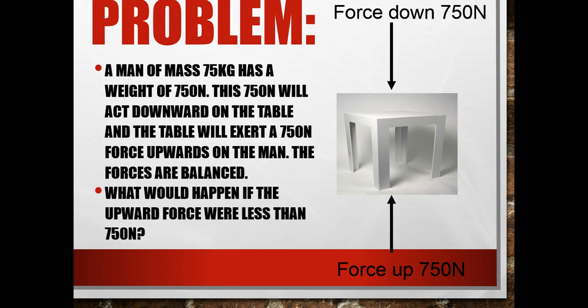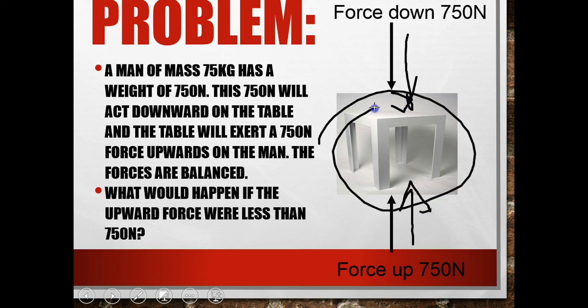Here's a problem in the same kind of format, but as a word problem. A man of mass 75 kilograms has a weight of 750 newtons. This 750 newtons will act downward on the table, so we have a force downward of 750 newtons. The table will exert a 750 newtons force upward on the man, so the forces are balanced. What would happen if the upward force were less than 750 newtons? If the force going up is not as strong as the force going down, then the table would break.